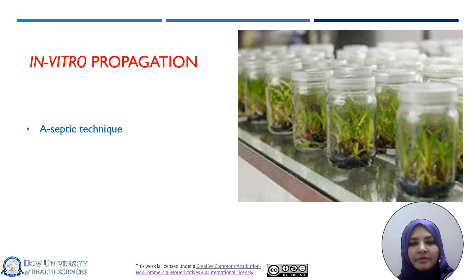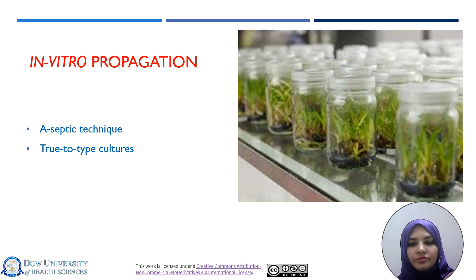Tissue culture is basically a technique in which small fragments of the plant — we also call them explants — such as leaves, shoots, roots, or any part, can be introduced in an artificial nutrient medium with known composition, which allows the functioning and growth of the tissues. This is used to develop thousands of genetically identical true-to-type plants from a single parent.